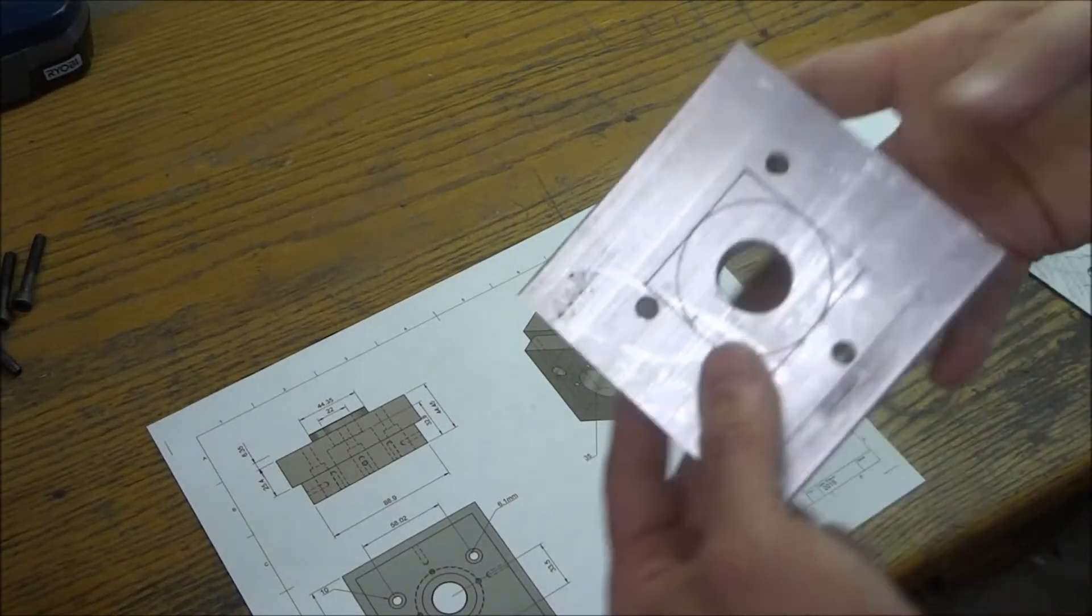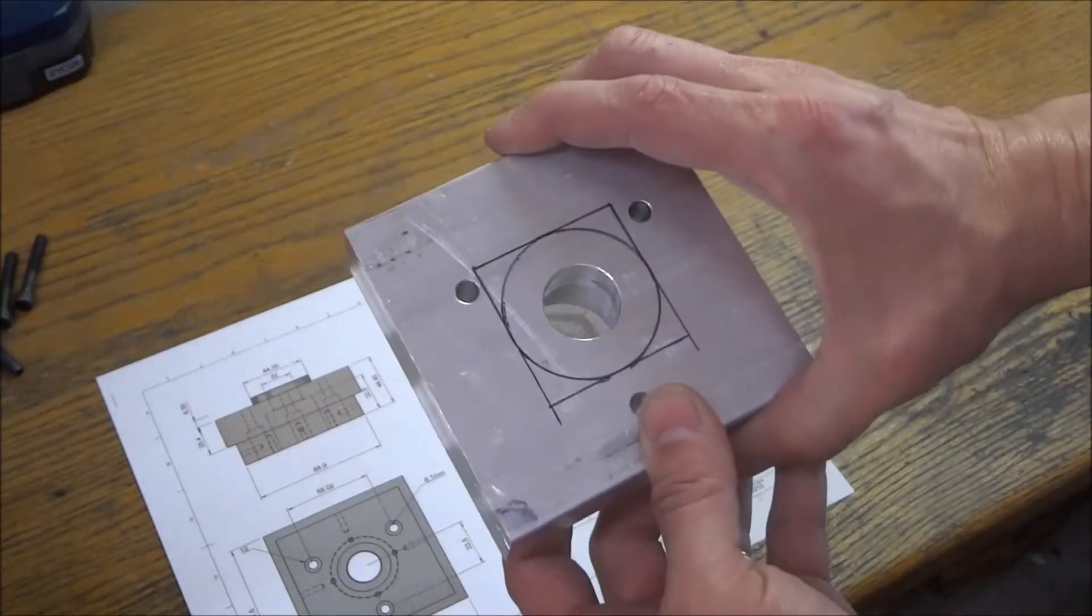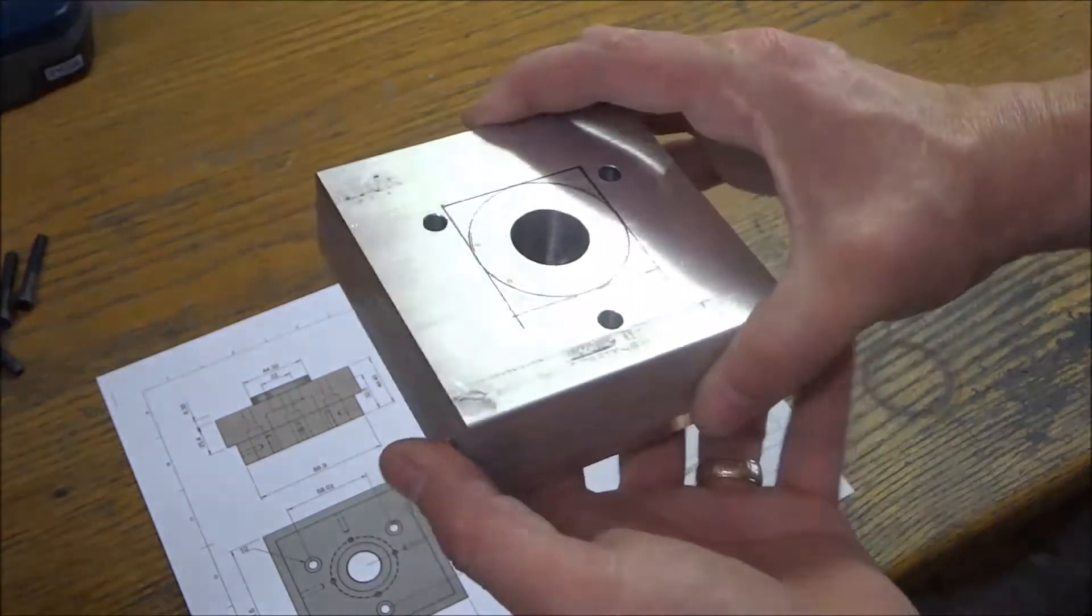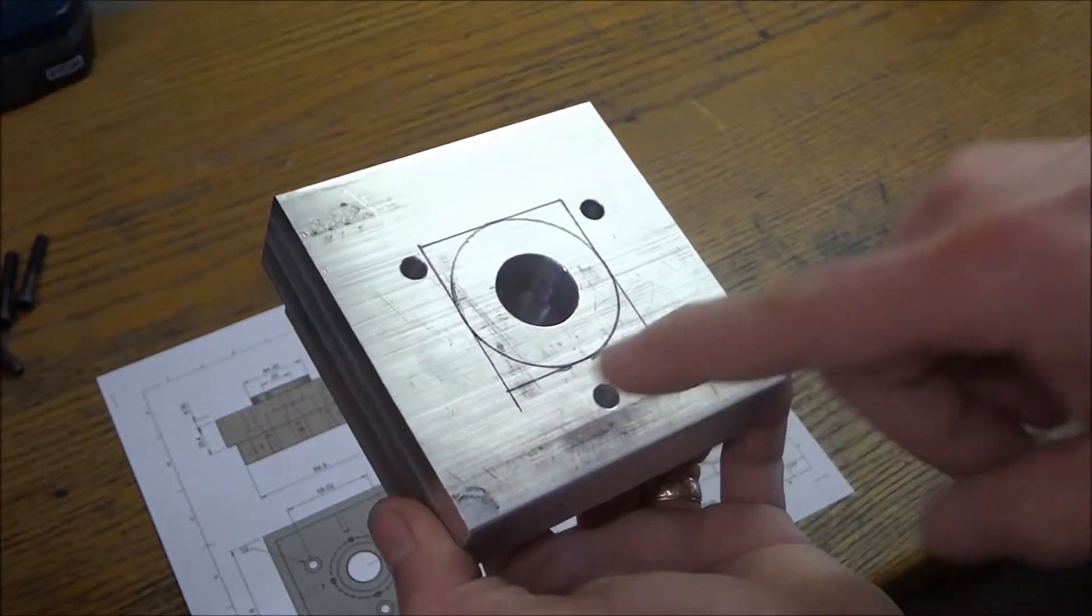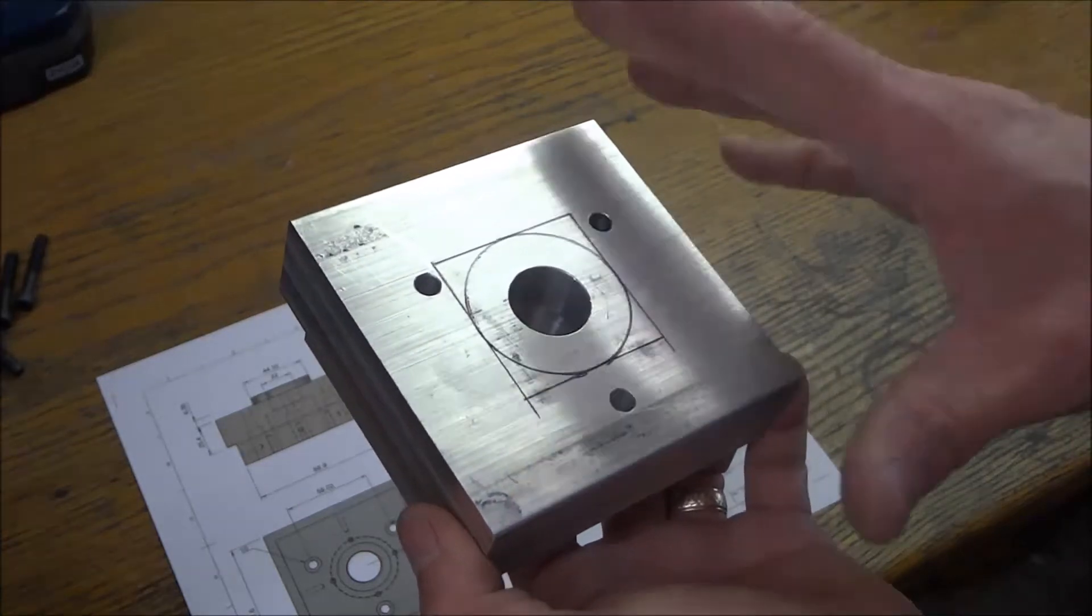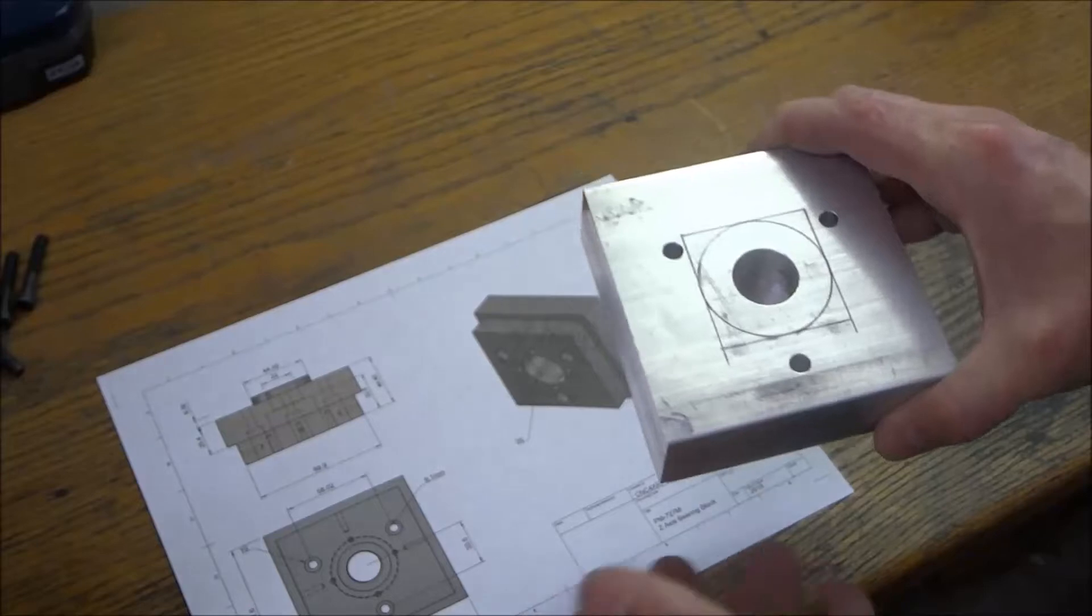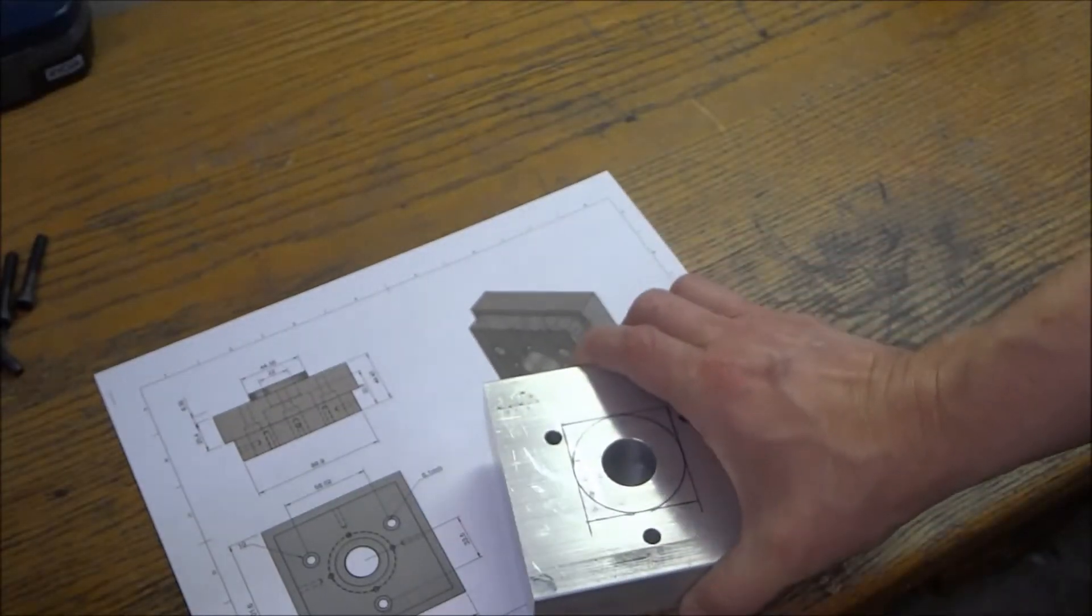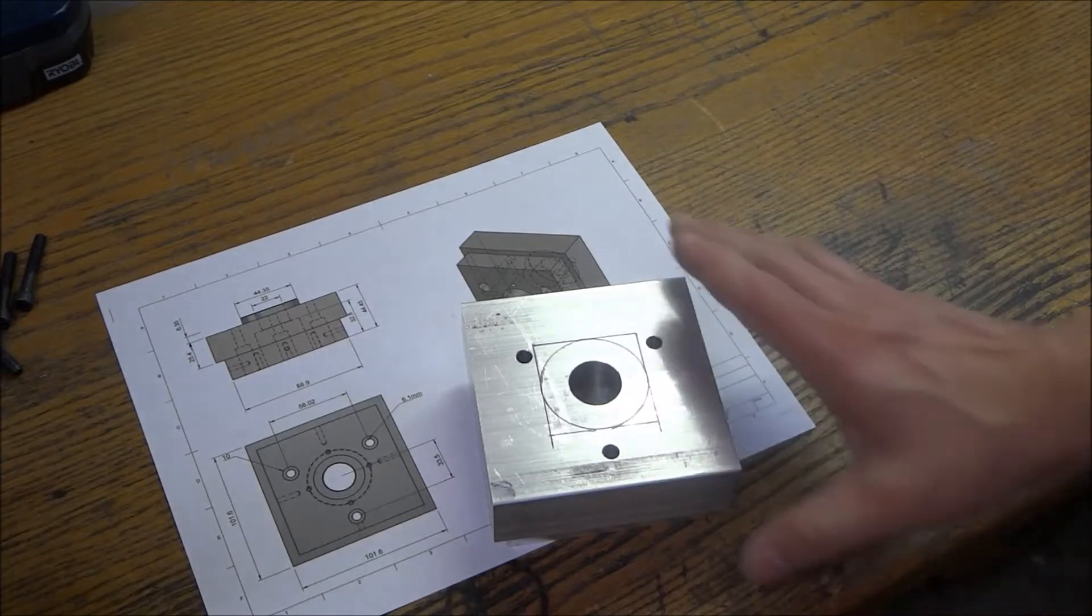And that'll be on the back side. Now originally I thought that I would just chuck this in my G0602 with a four-jaw chuck and turn this, and if you have a lathe, that is the best way to do it. However, if you do not have a lathe and all you have is a Precision Matthews, then I'm going to show you how to do that. So let's go out to the mill and we'll get this machined out.